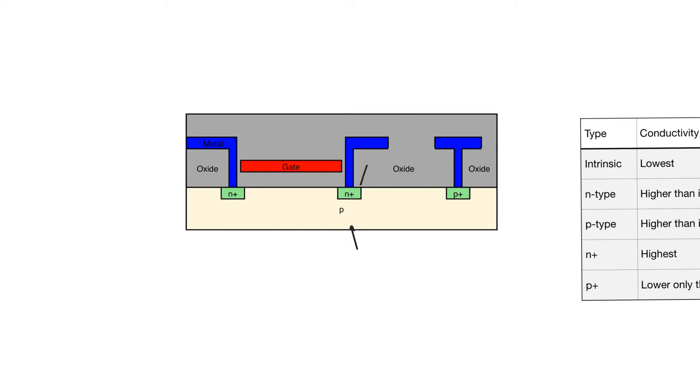We also need N-plus silicon, which is used to make the drains and sources of NMOS transistors. And we use P-plus to create contacts to metal wires, which are used to contact the body of NMOS transistors to ground.